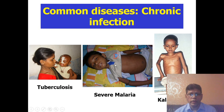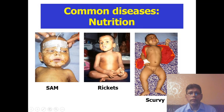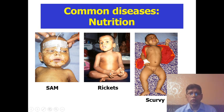Common chronic infections: tuberculosis — if mother has TB, the child may also have TB. And malaria and kala-azar. Common nutritional diseases: severe acute malnutrition. You should also know rickets and scurvy — important for examination, including X-ray findings.